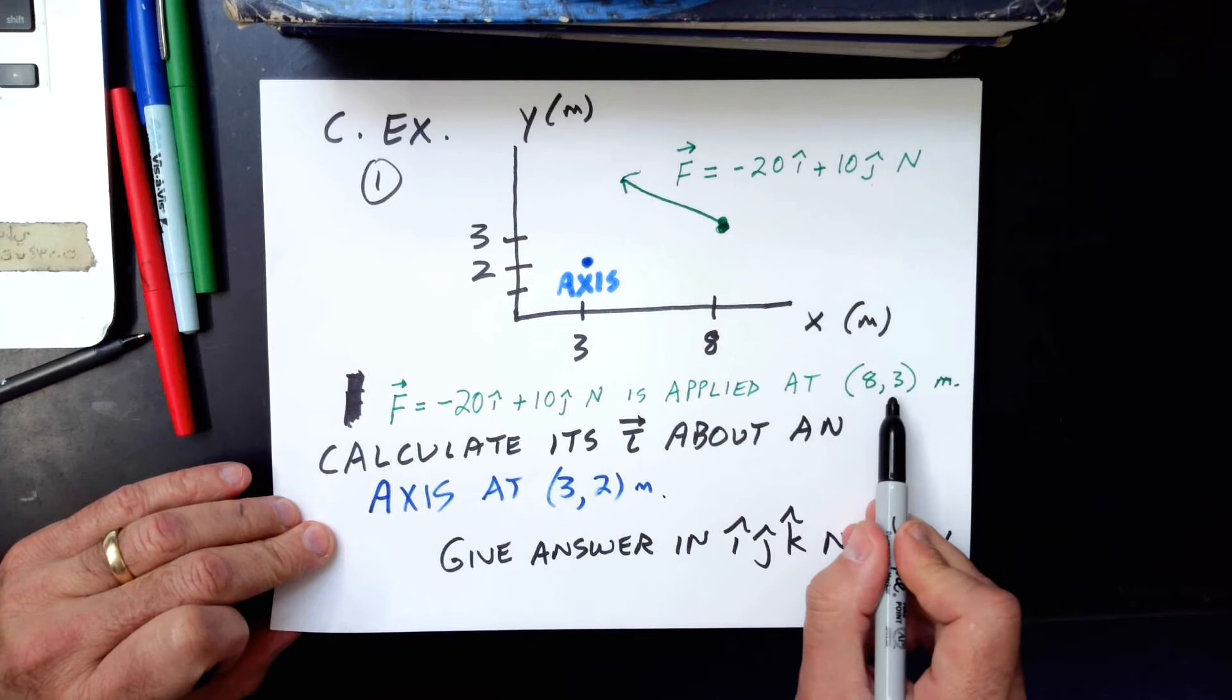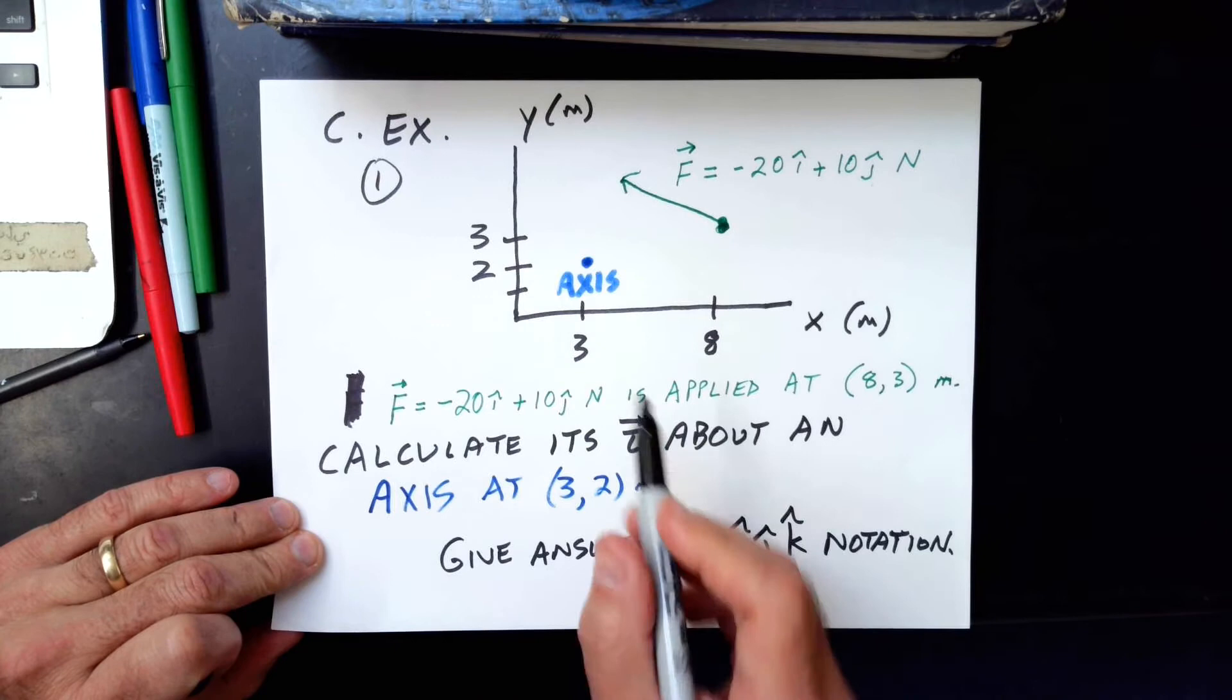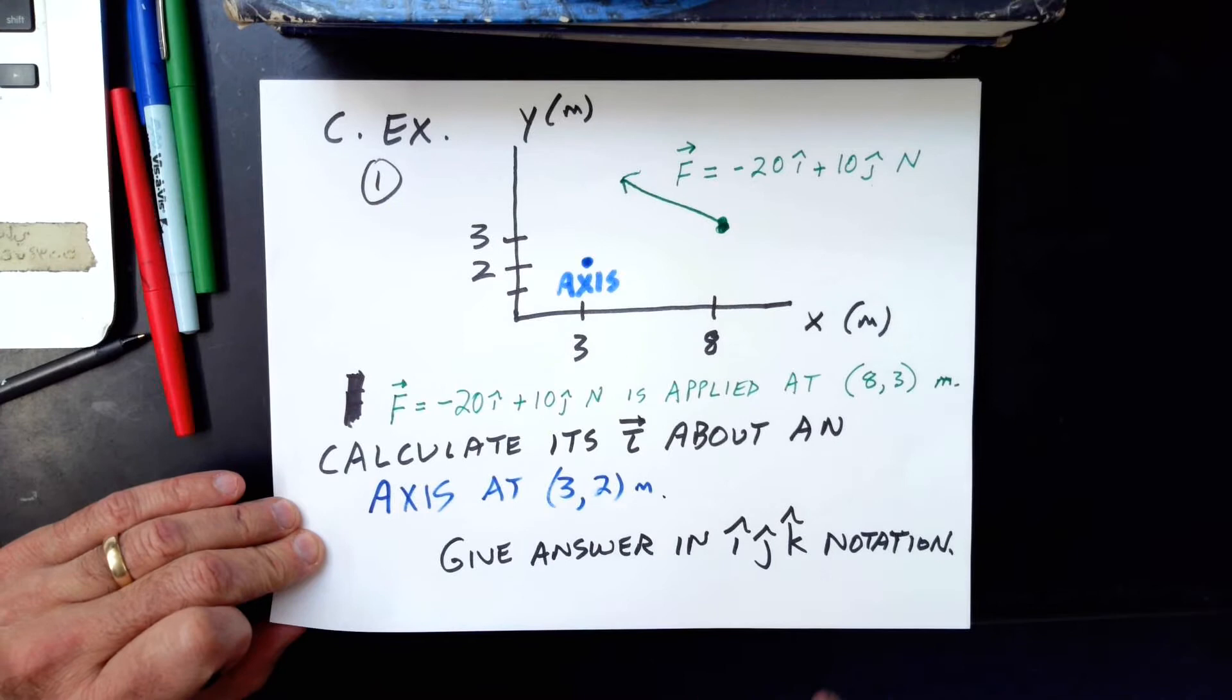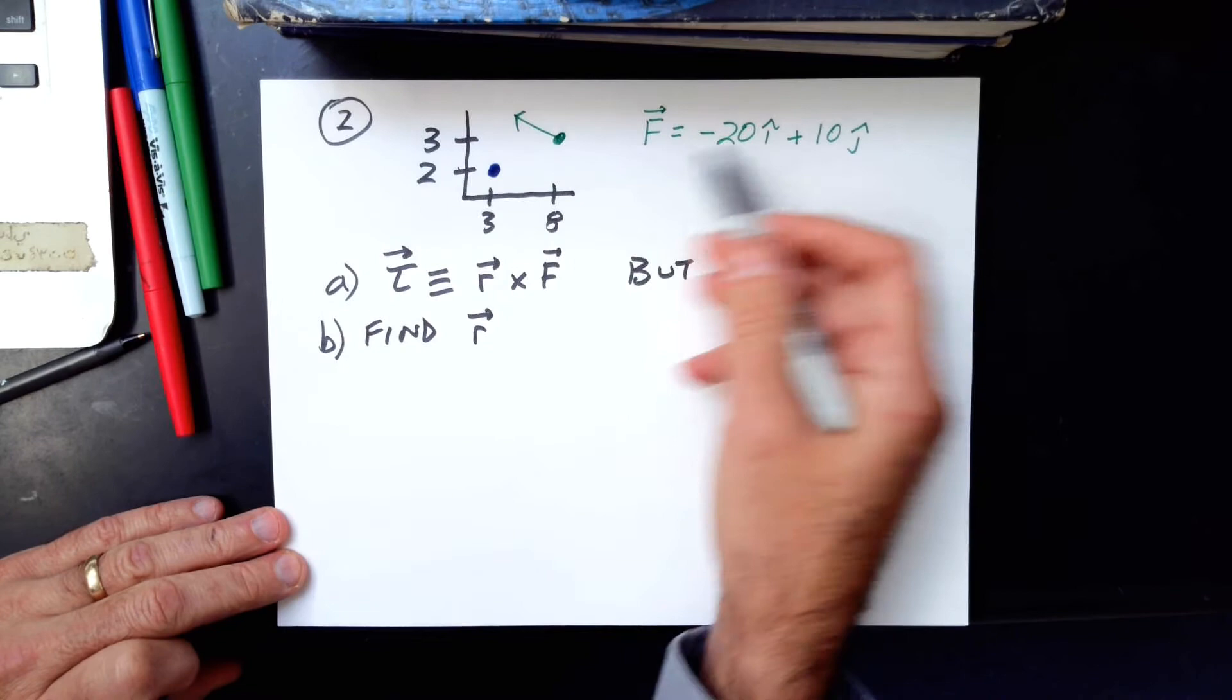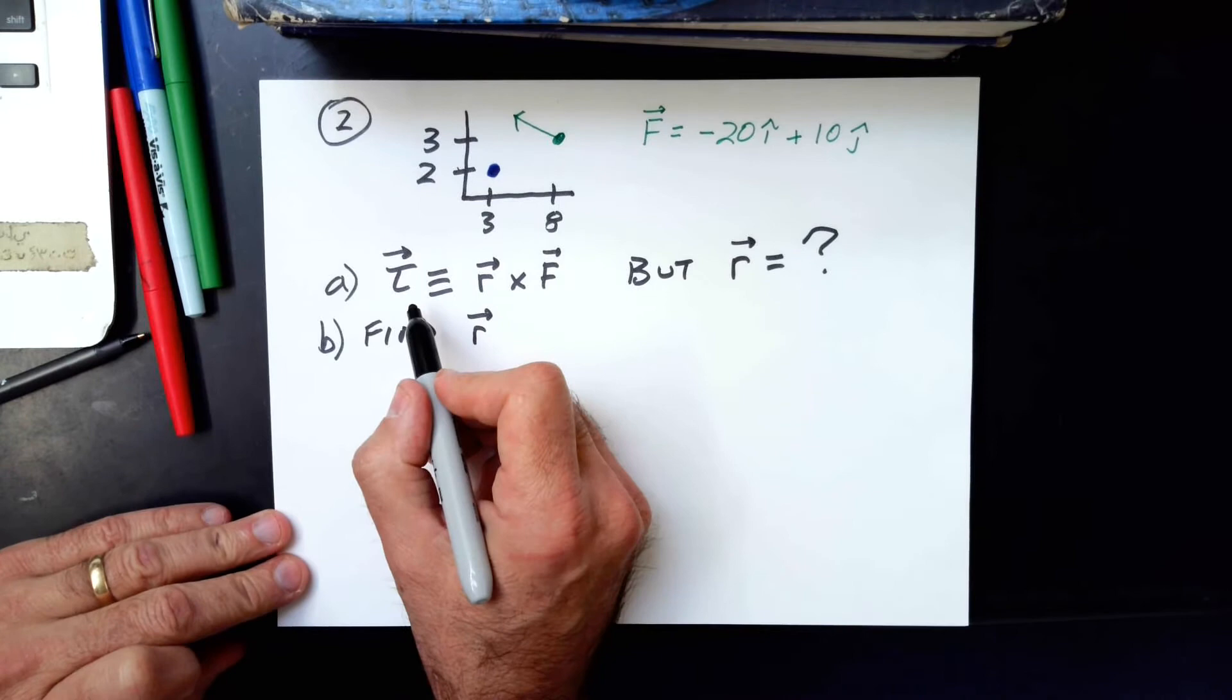So here's what's given. The force is given and it's applied at a point that has to be given, the point at which it's applied in order for you to figure out a torque. And they ask you to calculate its torque about this axis and the axis's coordinates are given. And they want you to give the answer in IJ notation. Now you should probably pause the video and just try to do this on your own and see if you can. Here's how we do it. So here it is in miniature. Everything's given from the previous page. And they ask us for the torque in IJK notation.